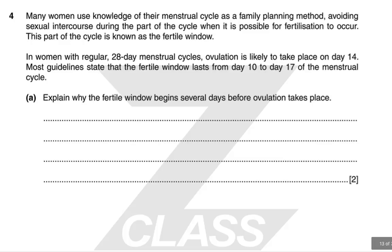Many women use knowledge of their menstrual cycle as a family planning method, avoiding sexual intercourse during the fertile window. In women with regular 28-day cycles, ovulation takes place on day 14, and Moore's guidelines state the fertile window lasts from day 10 to day 17. The fertile window begins several days before ovulation because sperm can survive up to five days — so even if ovulation hasn't occurred when sperm is present, sperm could still survive and fertilize the egg after ovulation.